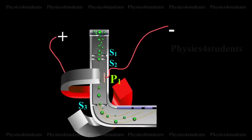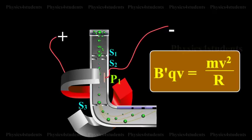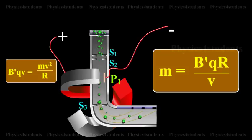The force due to magnetic field B'QV provides the centripetal force. B'QV is equal to MV² by R. M is equal to B'QR by V.